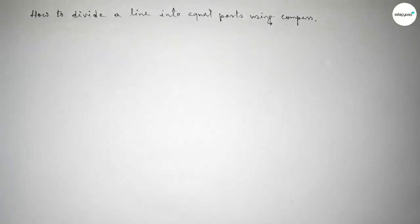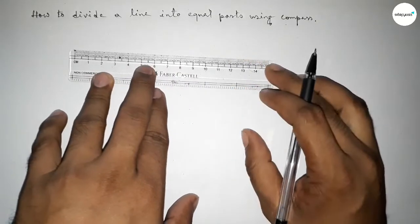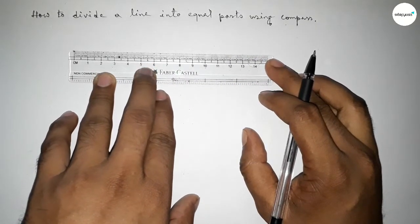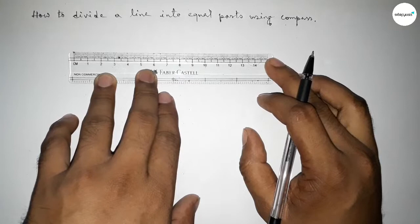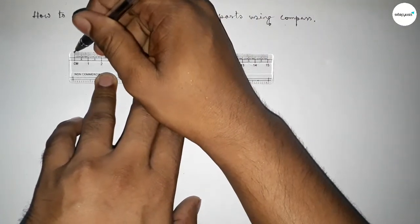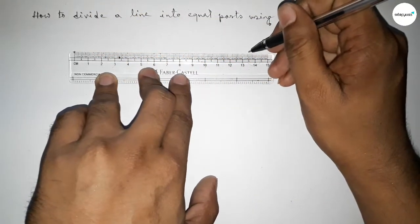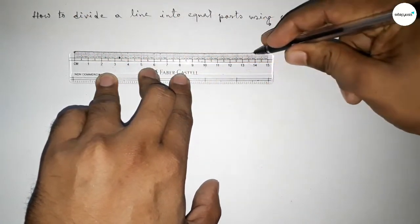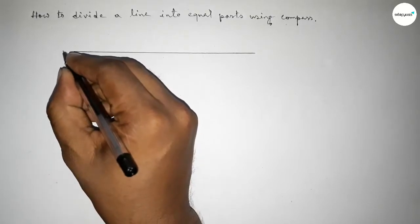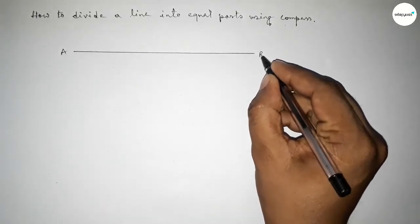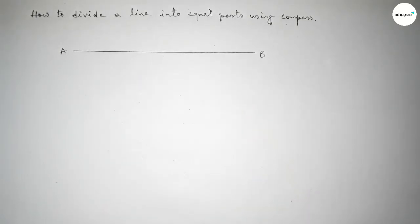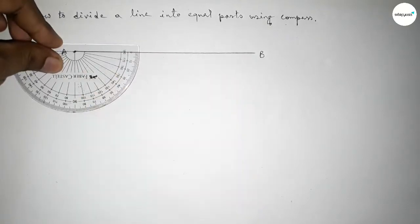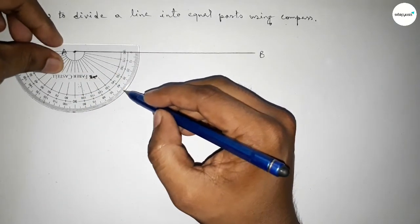First of all we have to draw a line of any length. I'm taking a line of length 14 centimeters — you can take any length. Drawing the line and taking point A here and point B here.